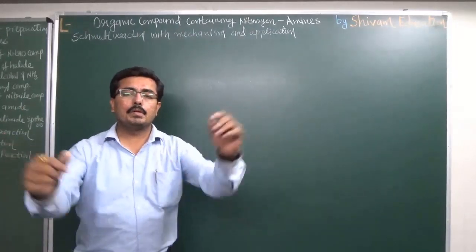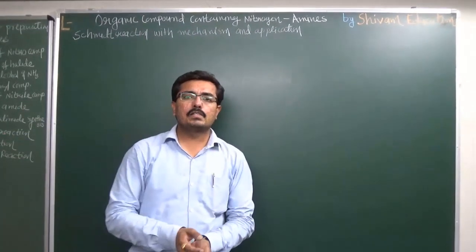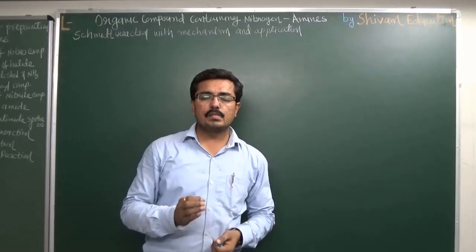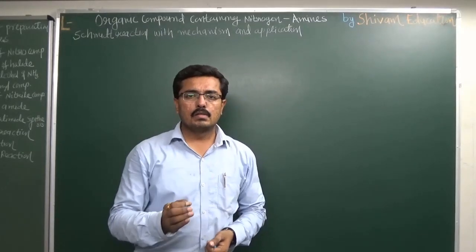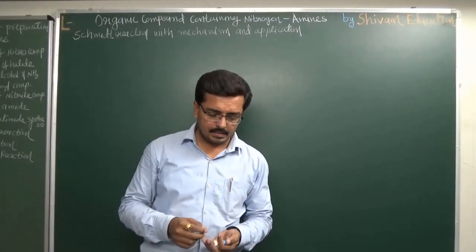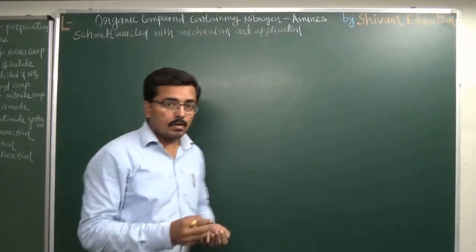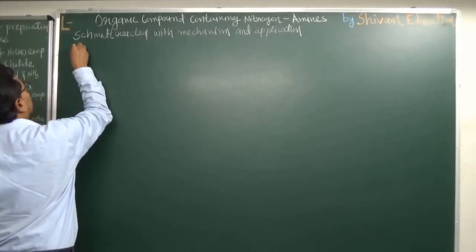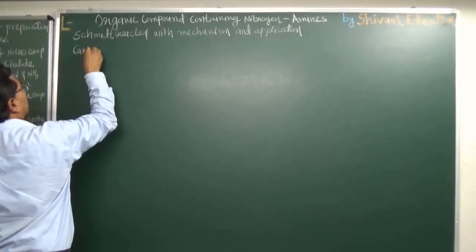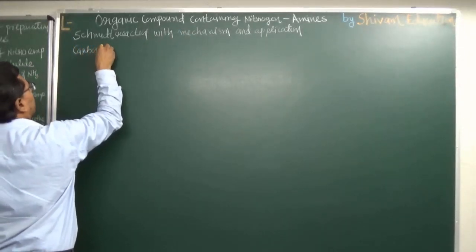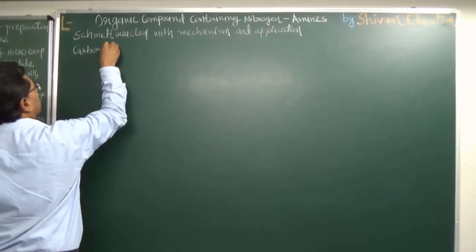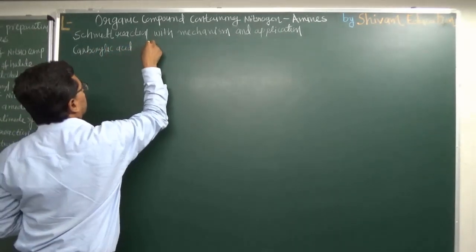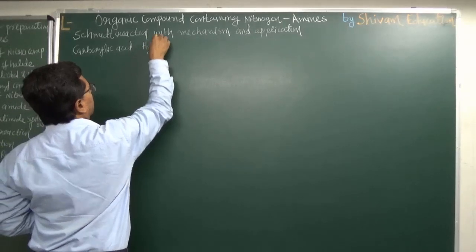Hello students, welcome to my YouTube channel SIVAM EDUCATION. In today's class we will study about the Schmidt reaction with its mechanisms. The purpose of the Schmidt reaction is that we can use it when we have a carboxylic acid, which on reaction with hydrazoic acid gives a primary amine.